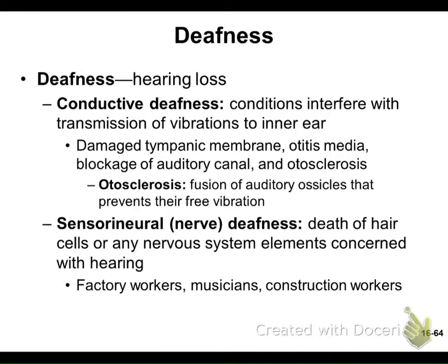For smell, the olfactory nerve is triggered by chemicals. Smell is the one sense that doesn't go to the thalamus — it goes to the amygdala for emotions, to the olfactory cortex in the temporal lobe and part of the insula, and also to the hippocampus to help elicit memory. Now let's talk about the pathway for hearing, picking up with slide 65 on the projection pathways.